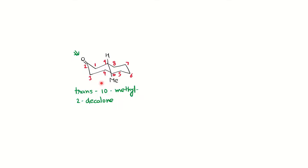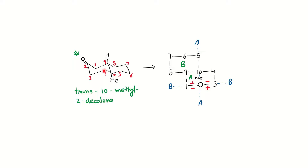We have to find out — if they ask — the suitable configuration which gives a positive Cotton effect for trans-10-methyl-2-decalone. One important point: whenever you draw the conformation, the carbonyl group should always be on top, towards the observer, or closer to the observer. Basically, the carbonyl group should be above the plane. Now we will draw the quadrant diagram with respect to the chromophoric oxygen, starting the diagram from the oxygen.